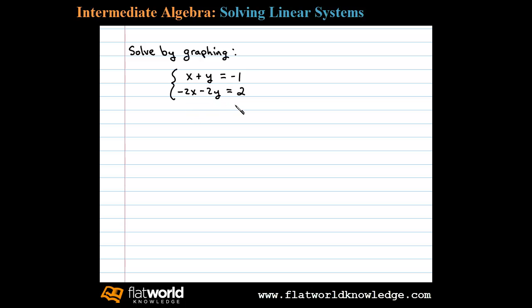Here we're asked to solve a linear system by graphing. Let's begin by finding an equivalent system where both of these equations are written in slope-intercept form. Now the first equation, x plus y equals negative 1, can be solved for y if we first subtract x on both sides, and that'll leave us with y equals negative x minus 1.